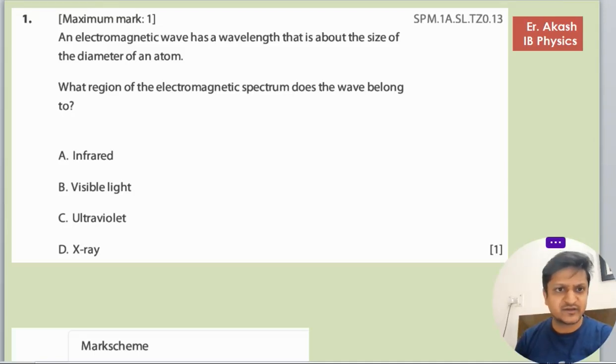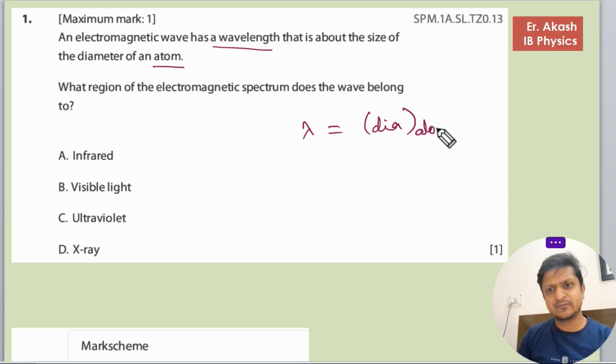How are you? So there's another question and the question says that an electromagnetic wave has a wavelength that is about the size of the diameter of an atom. So the wavelength, lambda, equals the diameter of an atom. What region of the electromagnetic spectrum does the wave belong to?